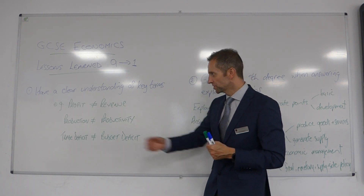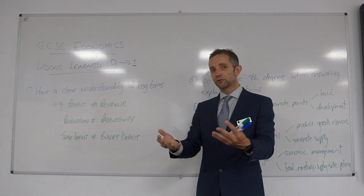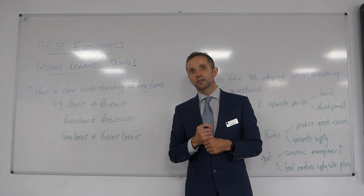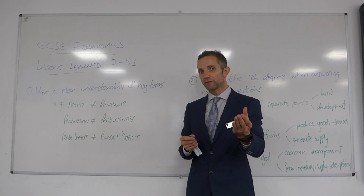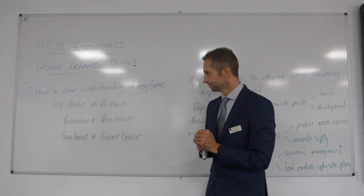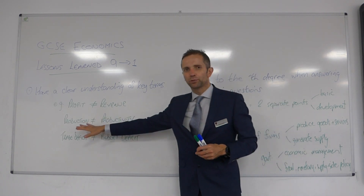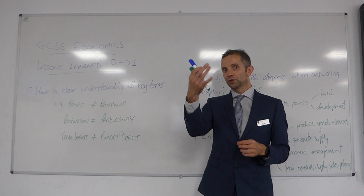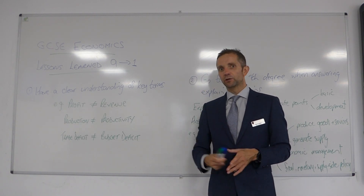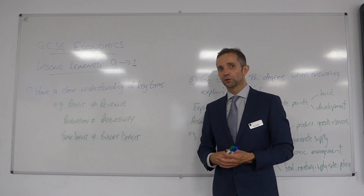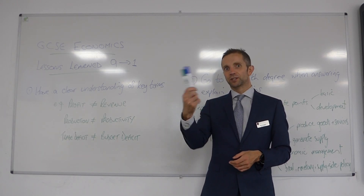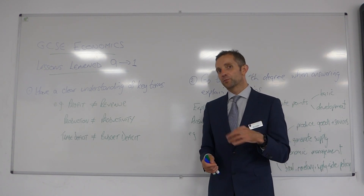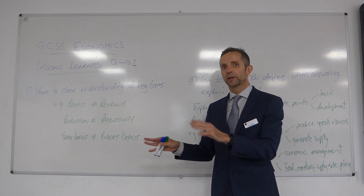Terms which might be confused: profit and revenue. Revenue is money coming in from sales — price times quantity. Profit is the difference between the revenue coming in and the costs going out. Production and productivity are another often confused pair. Production is simply how much you produce — say two pens. Productivity is output per worker per period of time, so if output doubles from two to four pens, productivity has gone up 100%.